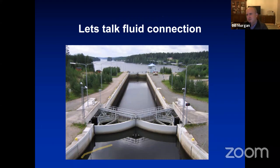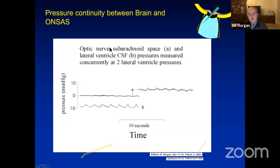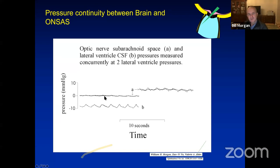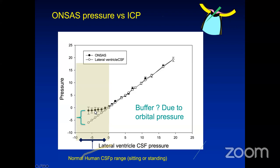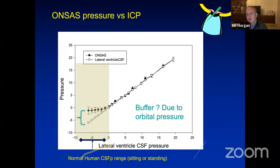Measurements of CSF pressure: we ran a pipette into the optic nerve subarachnoid space and simultaneously had a cannula in the brain measuring lateral ventricle pressure. When the lateral ventricle pressure was set very low—minus 8 millimetres of mercury—the optic nerve subarachnoid space pressure didn't fall any lower than zero. The orbital pressure around the back of the eye is probably about zero millimetres of mercury, and you can't force optic nerve subarachnoid space pressure to go less than orbital pressure.